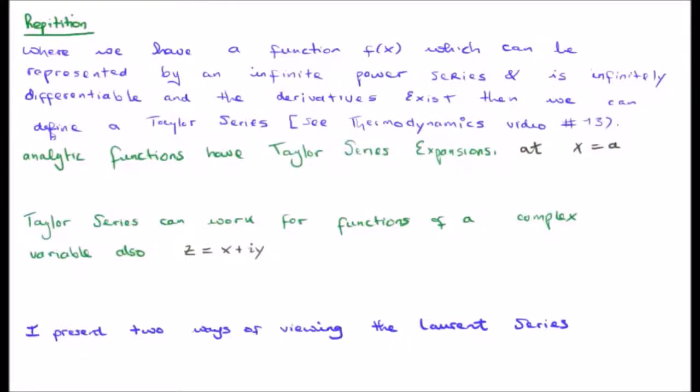At the risk of boring you, let's try some repetition. Where we have a function f(x) which can be represented by an infinite power series and is infinitely differentiable and the derivatives exist, then we can define a Taylor series. See the thermodynamics video number 13. Analytic functions have Taylor series expansions at x equals a or z equals z0. Taylor series can work for functions of a complex variable z such that z equals x plus iy.